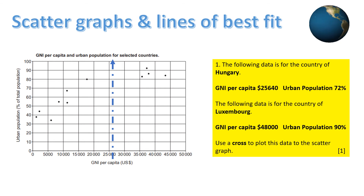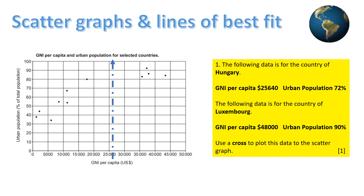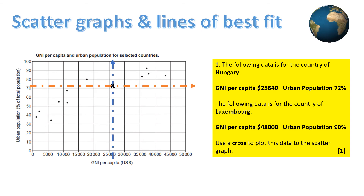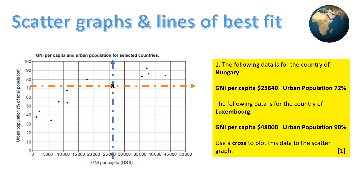Look carefully at the y-axis and move your finger or ruler up to 72 percent and place a cross, as the question instructs, at the point where the data intersects and meets. Double check your answer to ensure the cross is just above the 70 percent line. We can then repeat the process for Luxembourg — first find the x-axis data of 48,000 and place your ruler upwards at that point, then find 90 on the urban population and put a cross where they both meet.